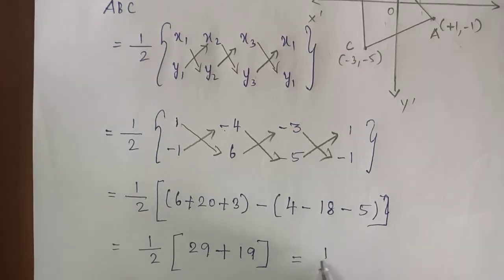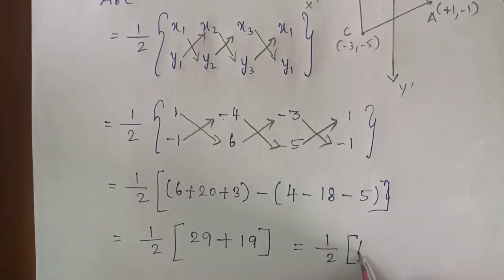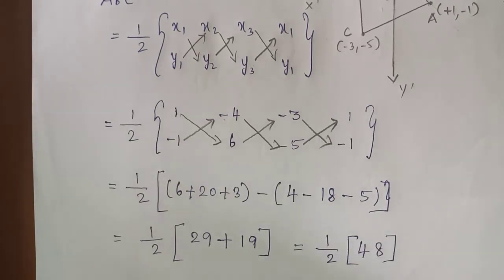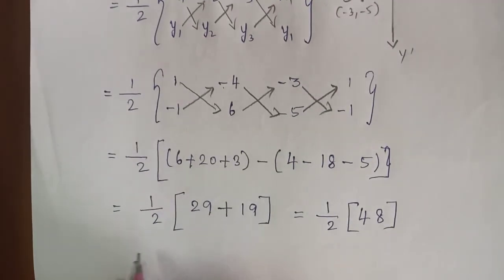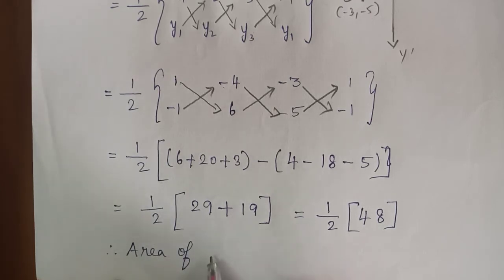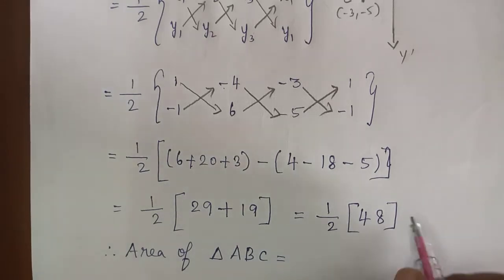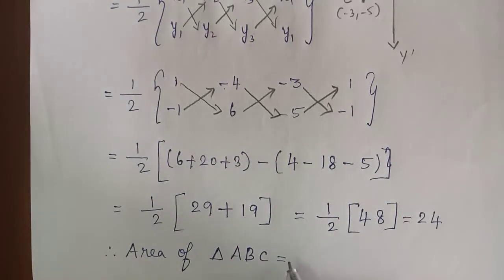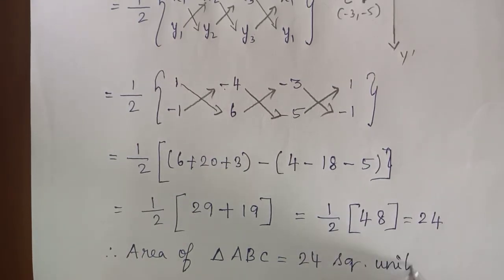Which is equal to (1/2) into (29 + 19) = (1/2) into 48. So 48 divided by 2 = 24. Therefore, area of triangle ABC is equal to 24 square units.